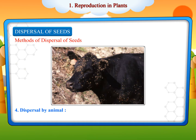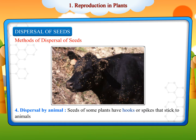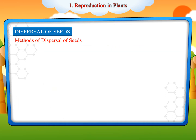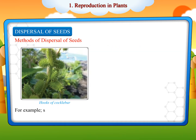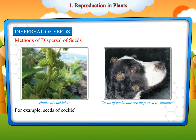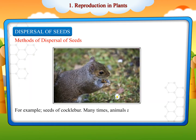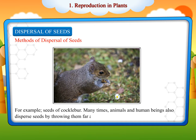Dispersal by Animals: Seeds of some plants have hooks or spikes that stick to animals and are dispersed. For example, seeds of Cocklebur. Many times, animals and human beings also disperse seeds by throwing them far away after eating fruits.